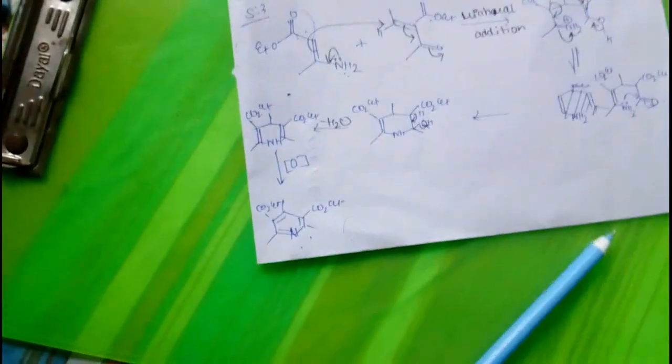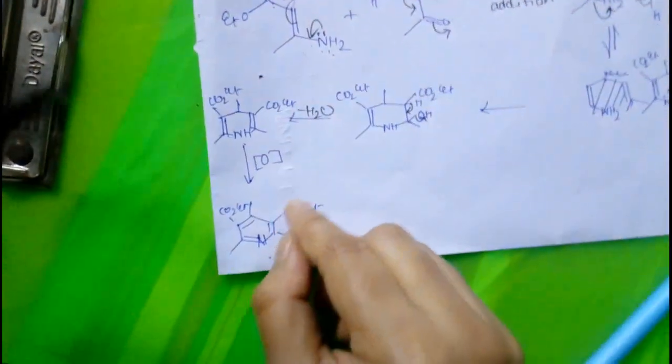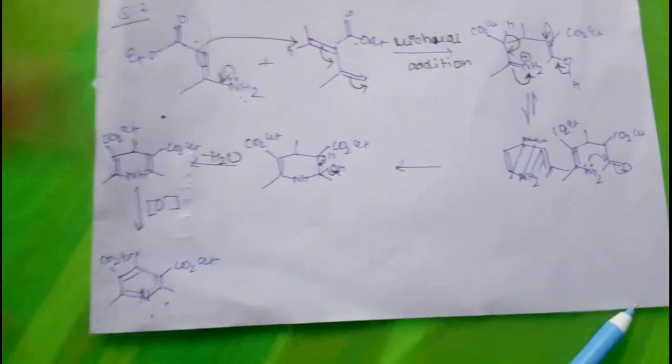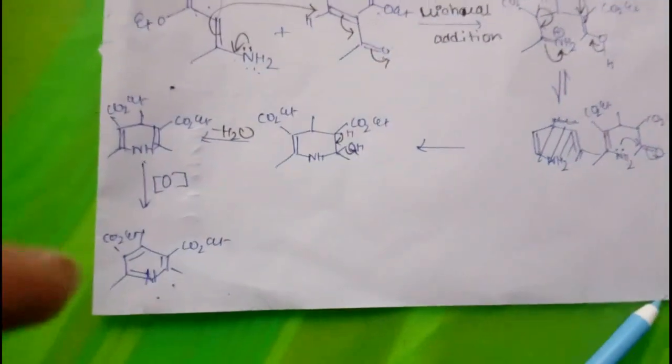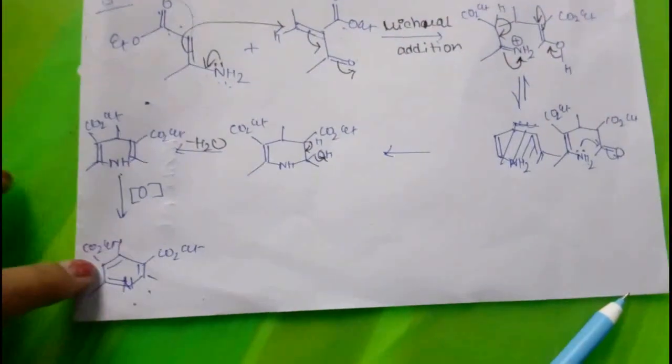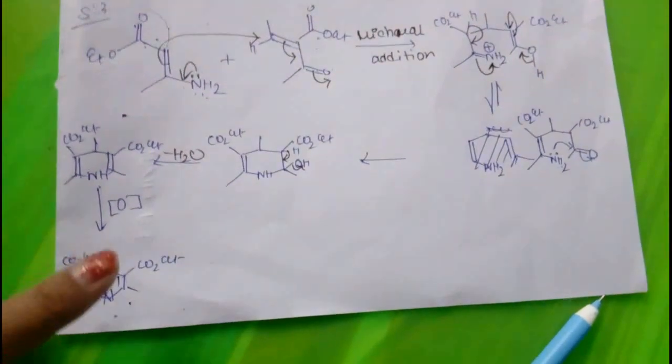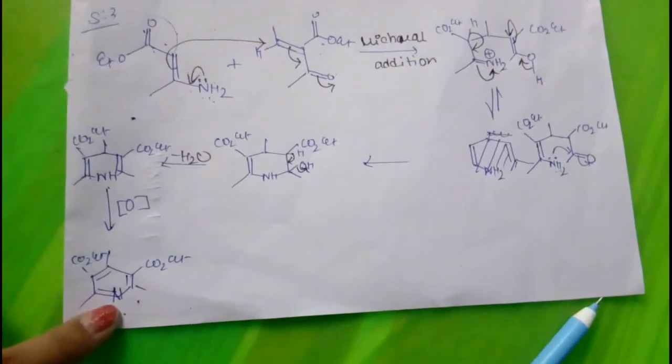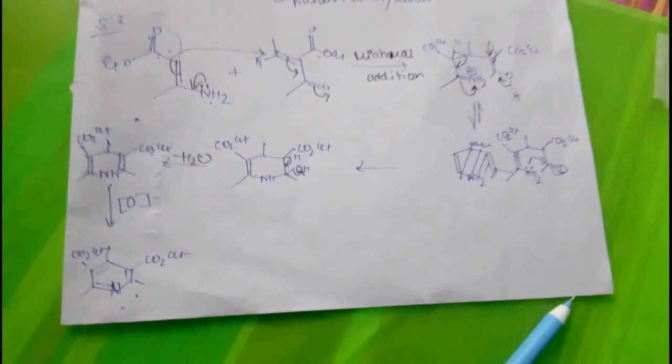This is how the product of Hanck's pyridine synthesis forms. Actually, the pyridine compound doesn't have these groups, but here it is actually the substituted pyridine compound. But we can call this pyridine because it is the product of Hanck's pyridine synthesis. Thank you.